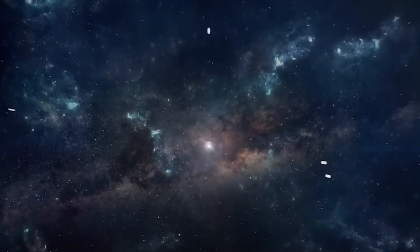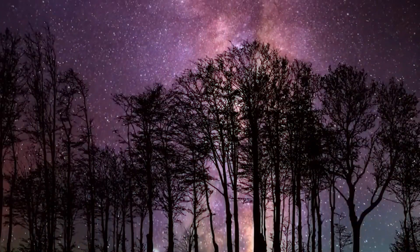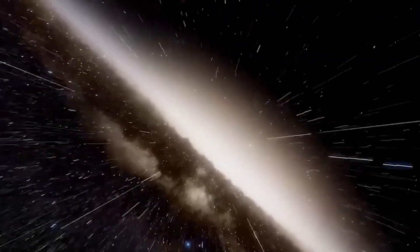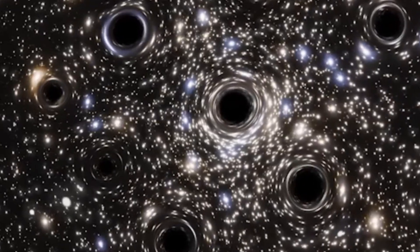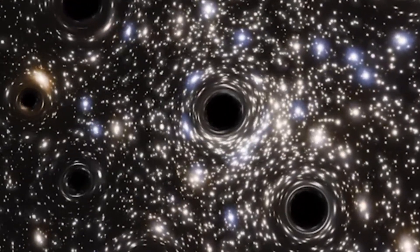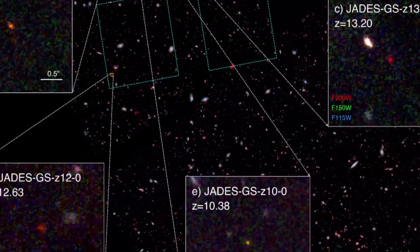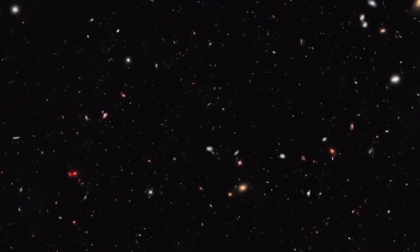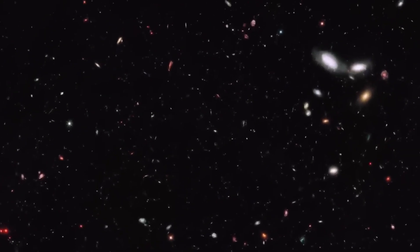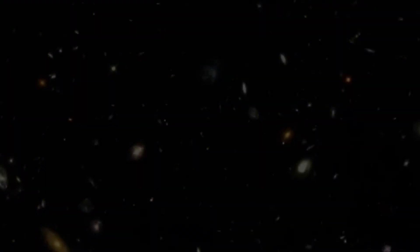Some theories take it even further, proposing that mysterious dark matter, the invisible substance thought to make up about 85% of the universe's mass, might actually be antimatter. Not in the way we usually think of it, but as a kind of shadow realm, an antimatter dimension that interacts with our universe primarily through gravity. This could explain why dark matter stubbornly refuses to show up in detectors, even though its gravitational fingerprint is etched across galaxies and clusters everywhere. Perhaps there are hidden dimensions beyond our current reach or undiscovered forces and phenomena lurking within the fabric of reality itself.